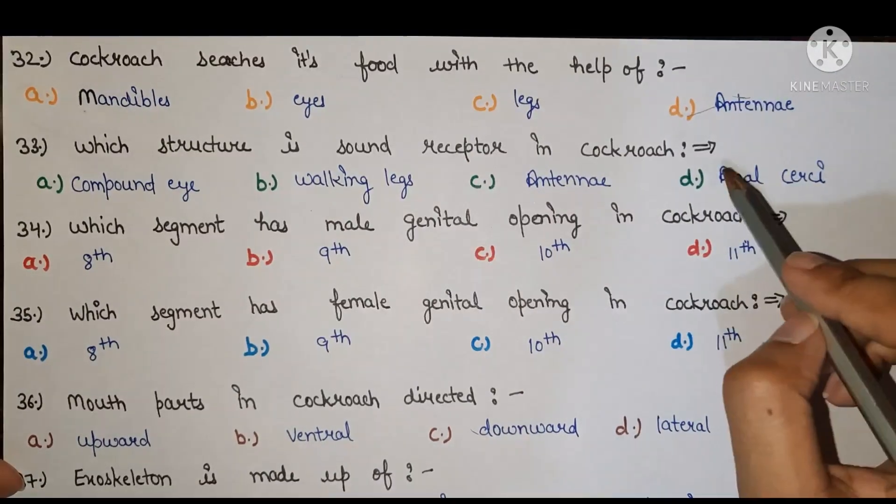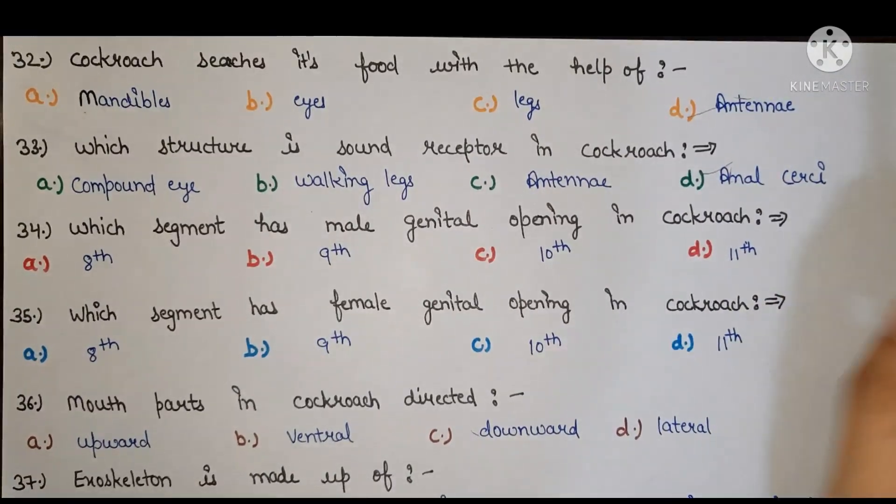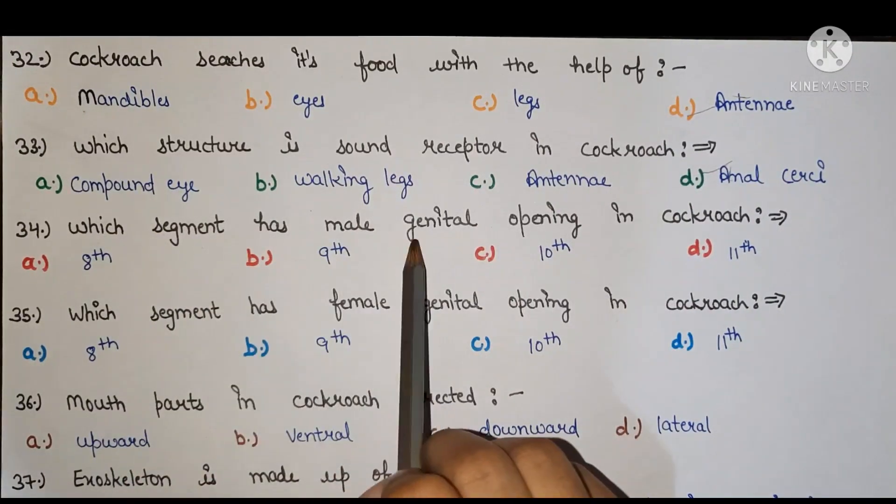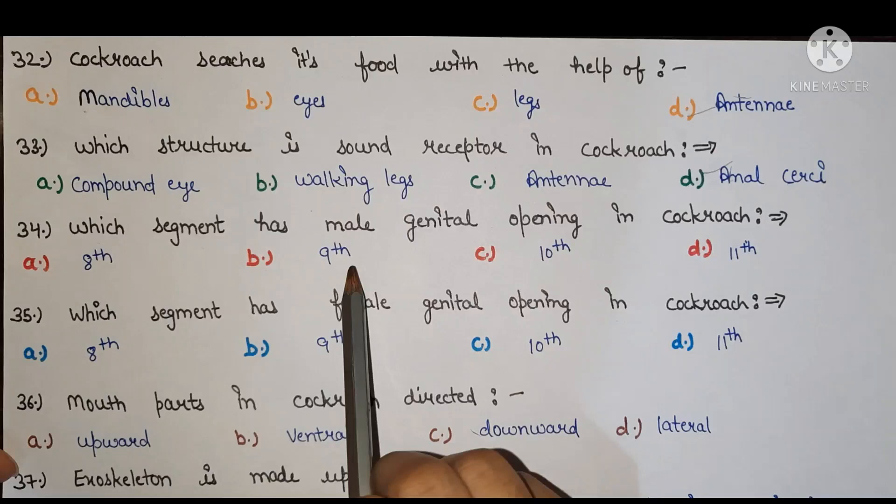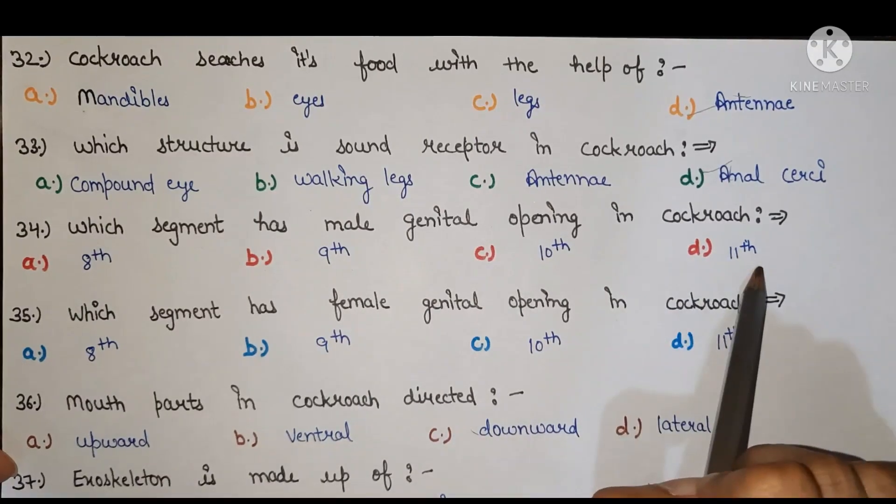Which segment has male genital opening in cockroach? A 8th, B 9th, C 10th, D 11th. Right answer is ninth segment mein genital opening present hoti hai male cockroach.